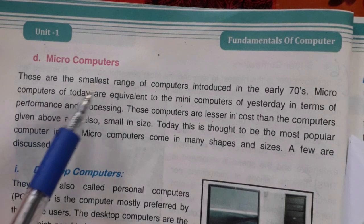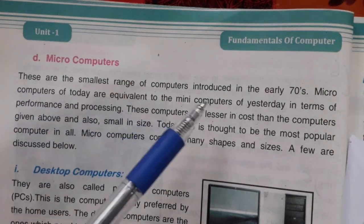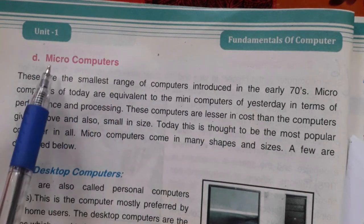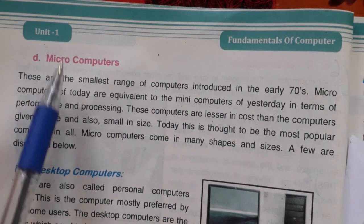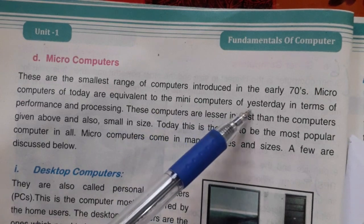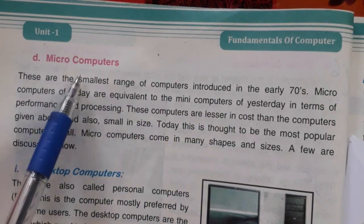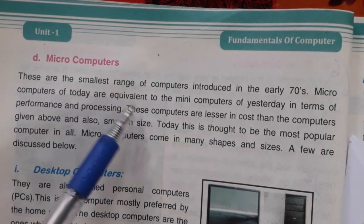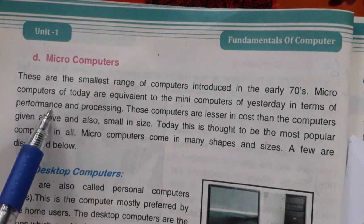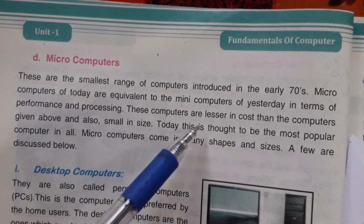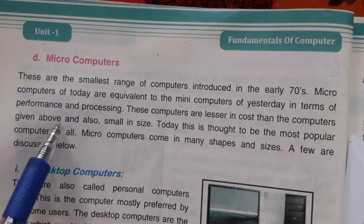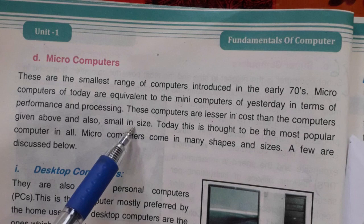Microcomputers are the smallest range of computers, introduced in the early 1970s. They are also called personal computers or PCs. Microcomputers of today are equivalent to the mini computers of yesterday — they are very powerful. These computers are lesser in cost and also small in size.